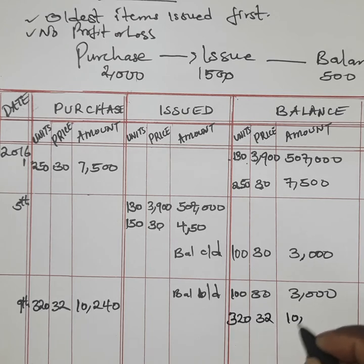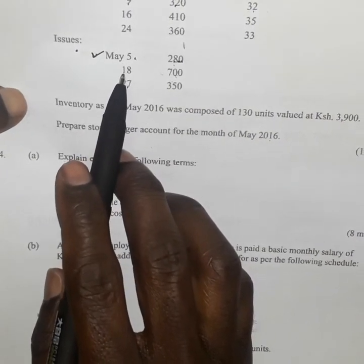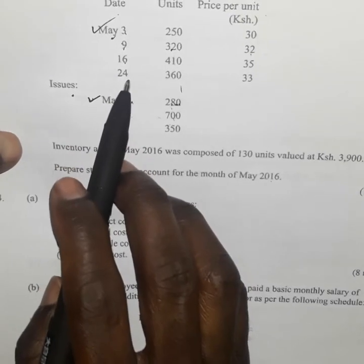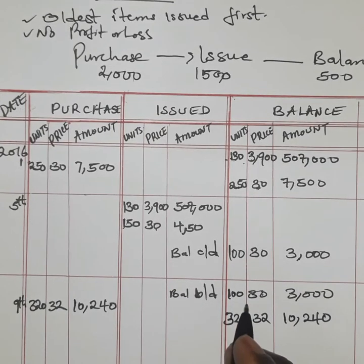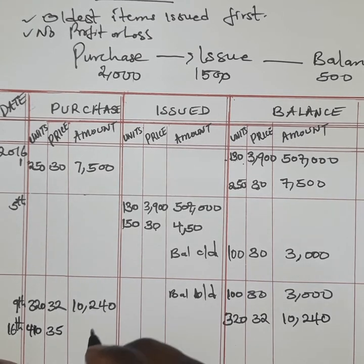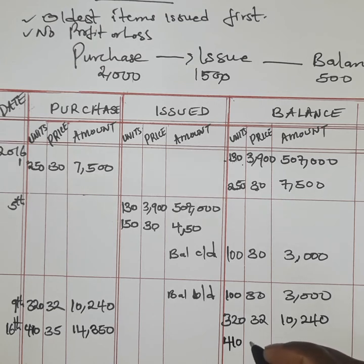Before the next issue on 18th, there is another purchase on 16th: 410 units at 35 shillings, giving an amount of 14,350. Following chronological order of dates, this 16th May purchase is part of the balance because it has not yet been used.